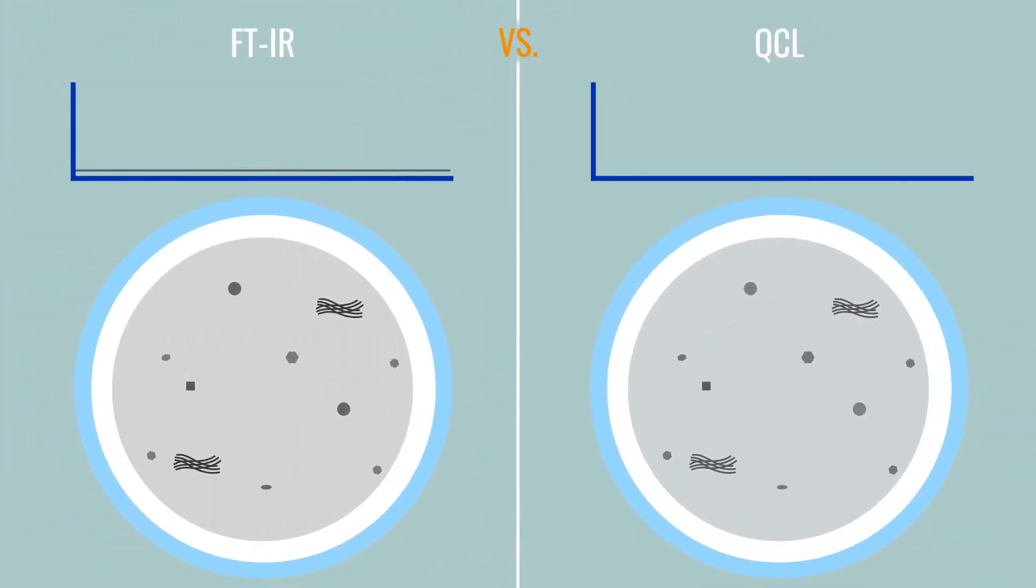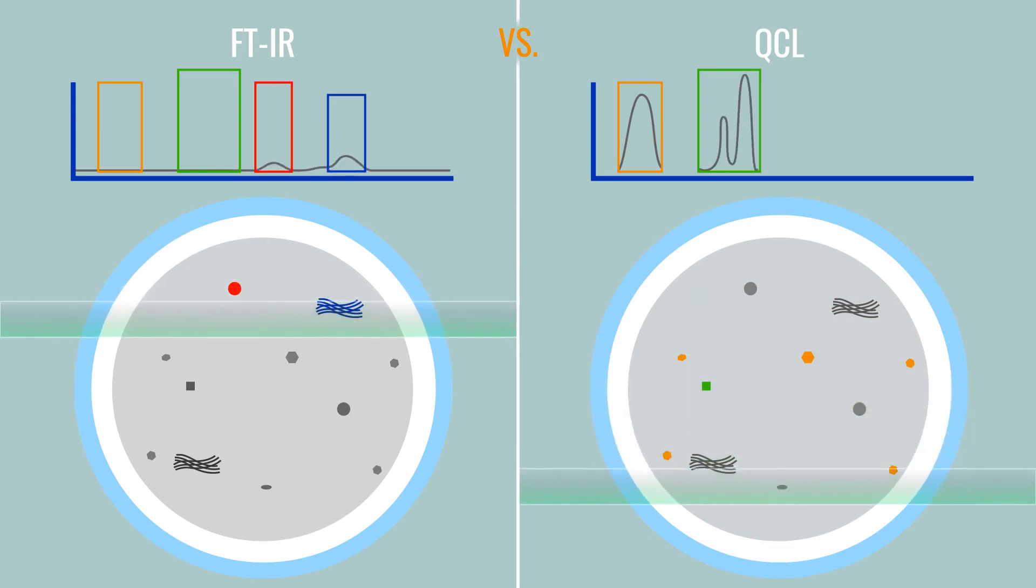Now if you already know which type of microplastics you're looking for, QCL spectroscopy can be focused solely on the specific and optimal infrared range, generating a beautiful high-contrast image and presenting you with a very quick answer to how many.